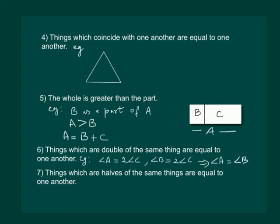Seventh Axiom says things which are half of the same thing are equal to one another. For example, if in a polygon, angle A is equal to half of angle C and angle B is equal to half of angle C, then angle A is equal to angle B.